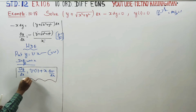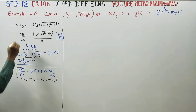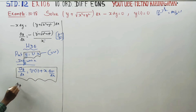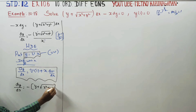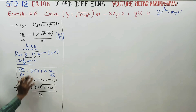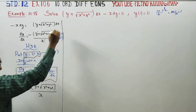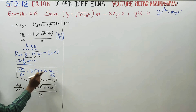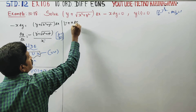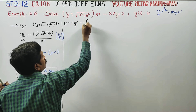dy by dx is equal to minus of y plus root of x square plus y square by x. Substitute this into the equation: v plus x dv by dx.